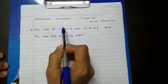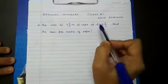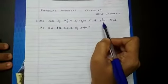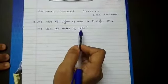The cost of 7⅔ meters of rope is rupees 12¾. Find the cost per meter of rope.